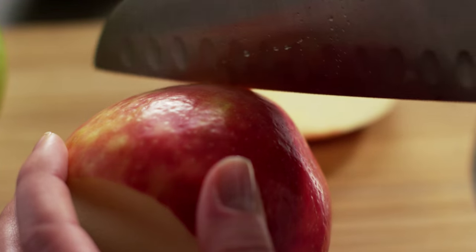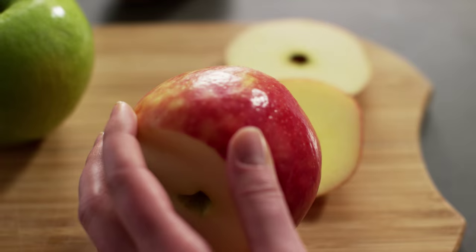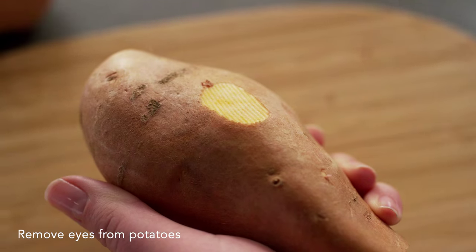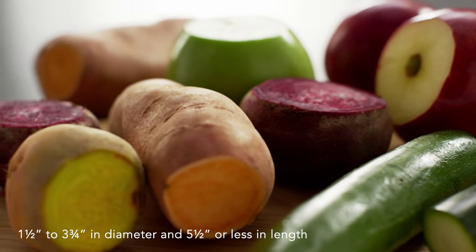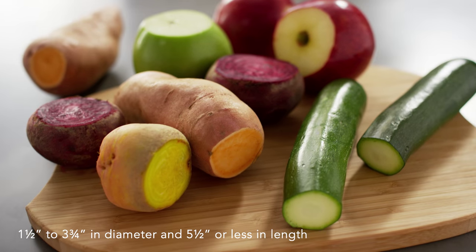Starting with fresh produce, remove stems, then cut the ends squarely, removing any eyes if applicable. Food should be 1½ to 3¾ inches in diameter and less than 5½ inches in length.